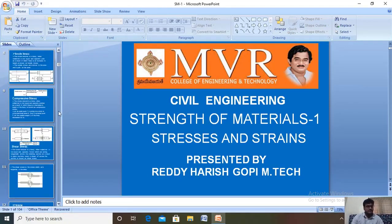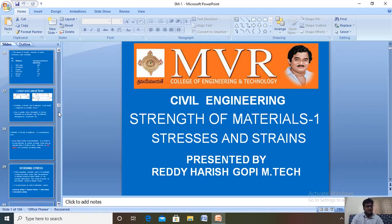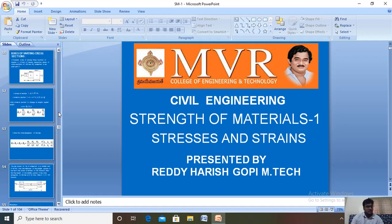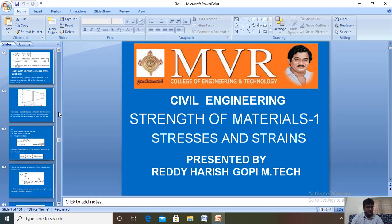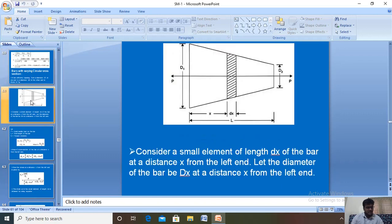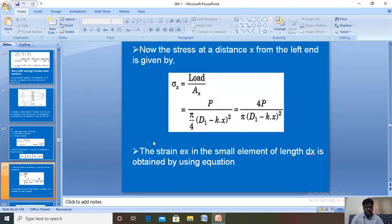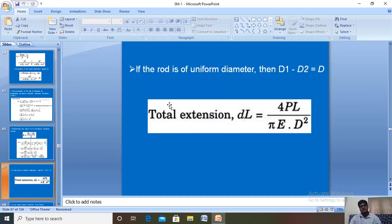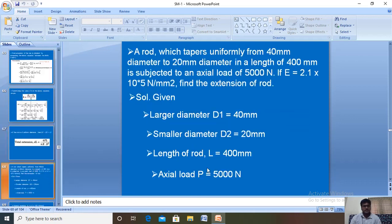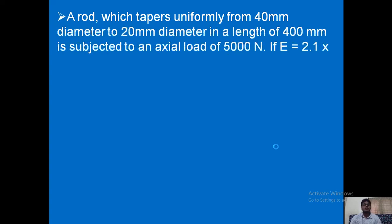Going to the topic, you can see the formula for bars of uniform circular section. This is the diagram for bars with varying circular cross section. The formula for total extension is dL equal to 4PL by pi·E·D square. Now we are going to discuss problems on this circular section, after which we will discuss rectangular section and problems on it.